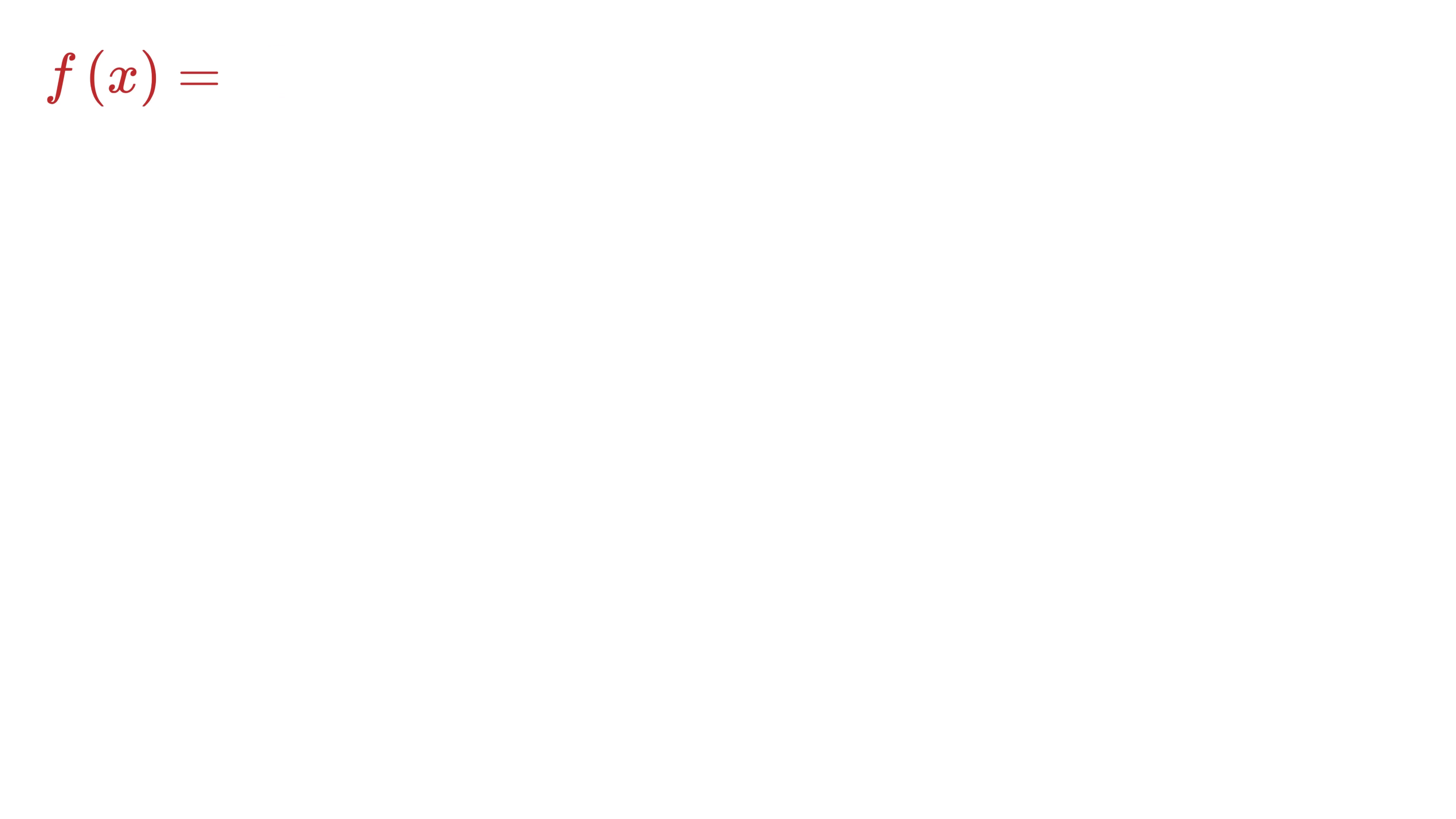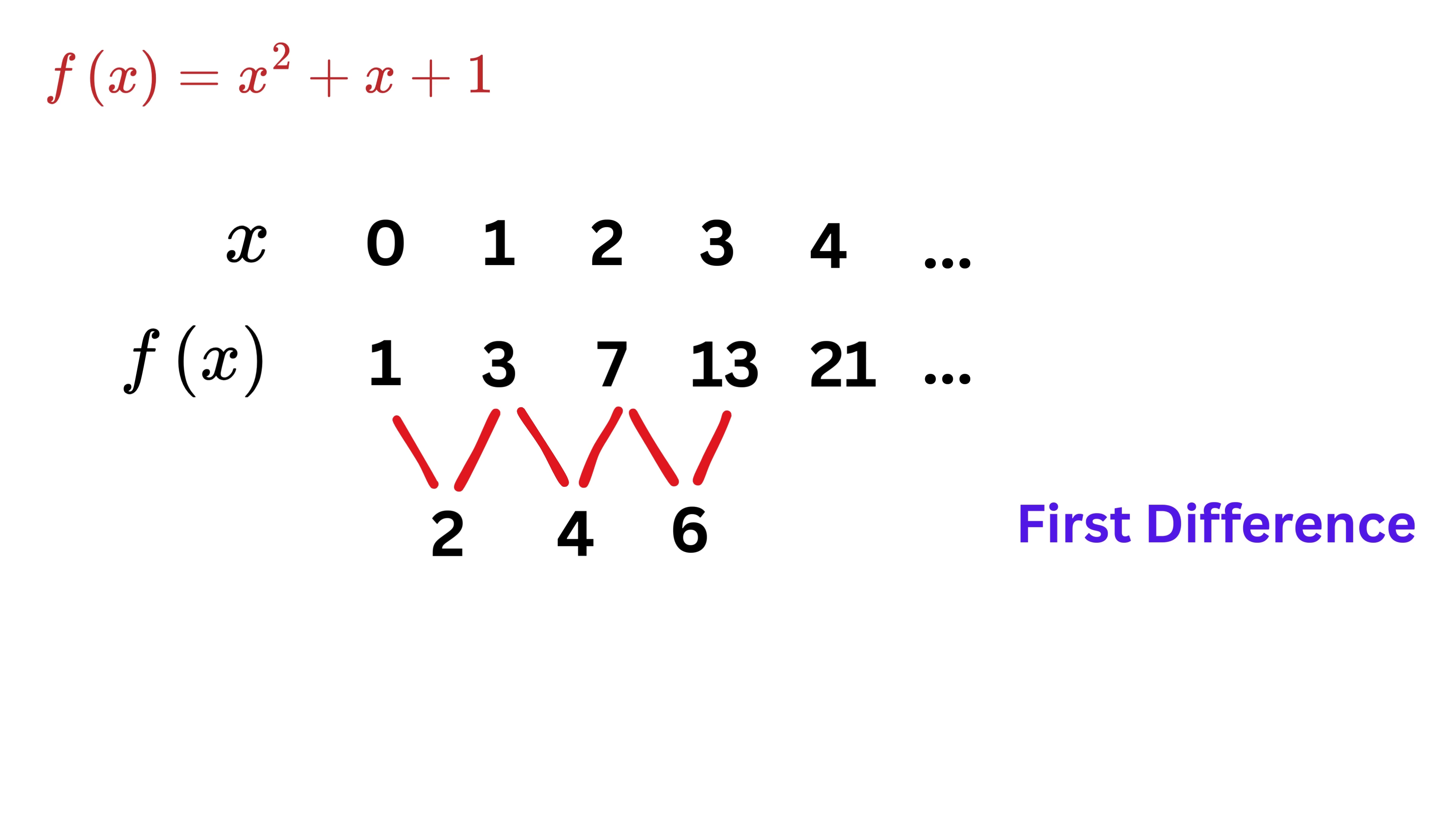Now take a quadratic function, for example something like x² + x + 1. If you again look at the outputs for consecutive values of x, we get these values. Now let us take the first difference: 3 minus 1 gives 2, then this gives 4, then we get 6, and then 8. So the first differences are no longer constant, but it looks linear, right?